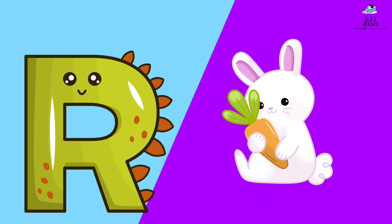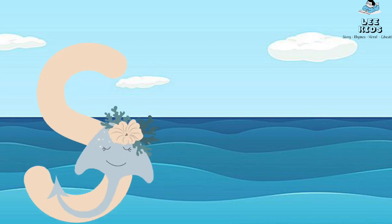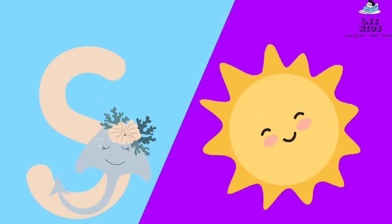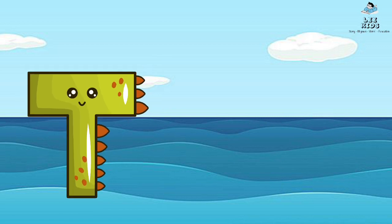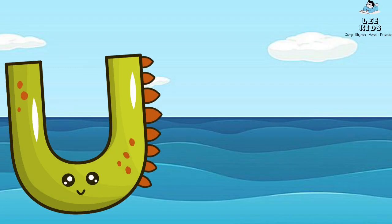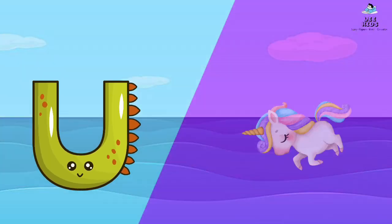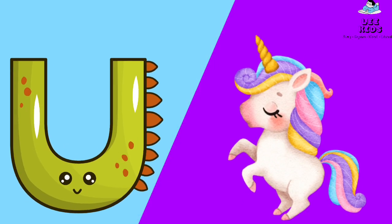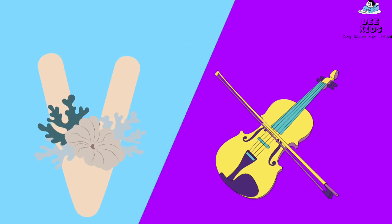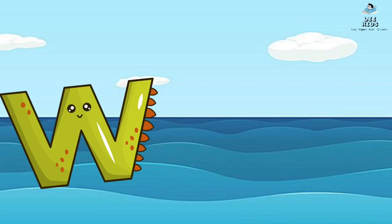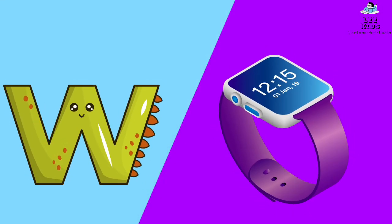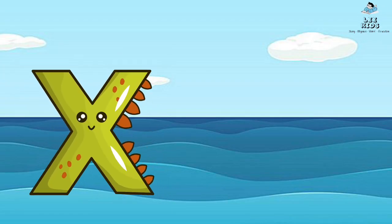S for sun, T for tiger, U for unicorn, V for violin, W for watch, X for xylophone.